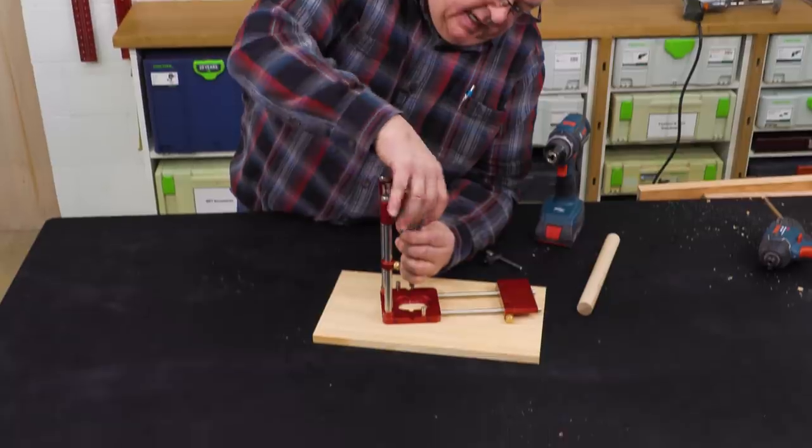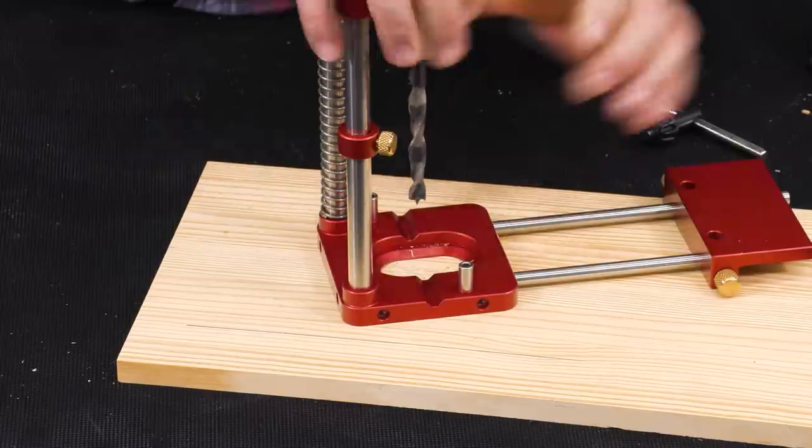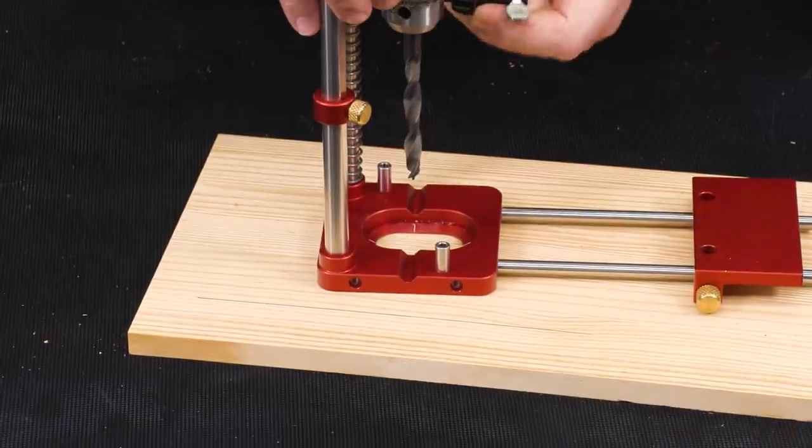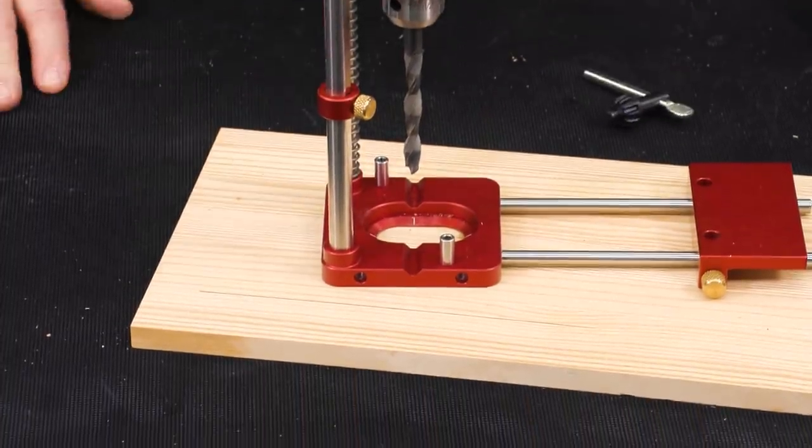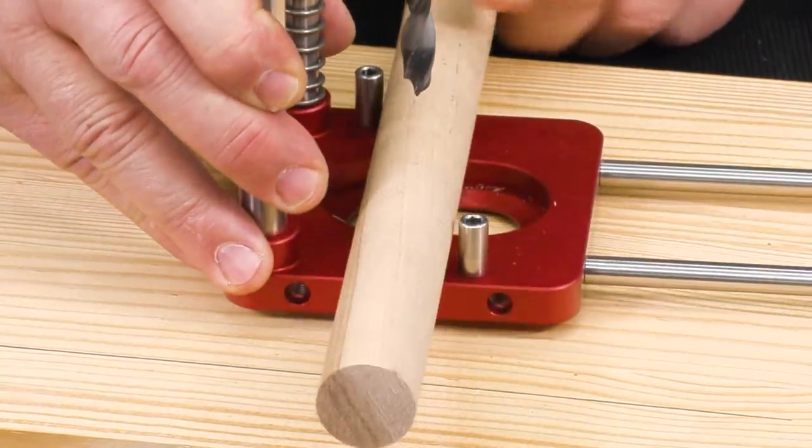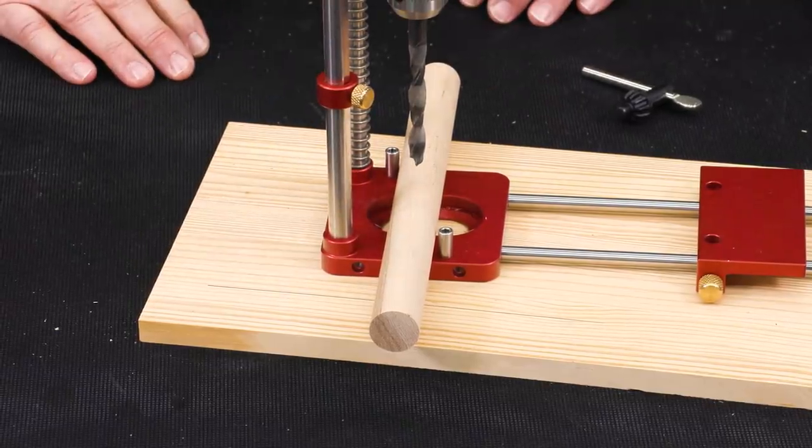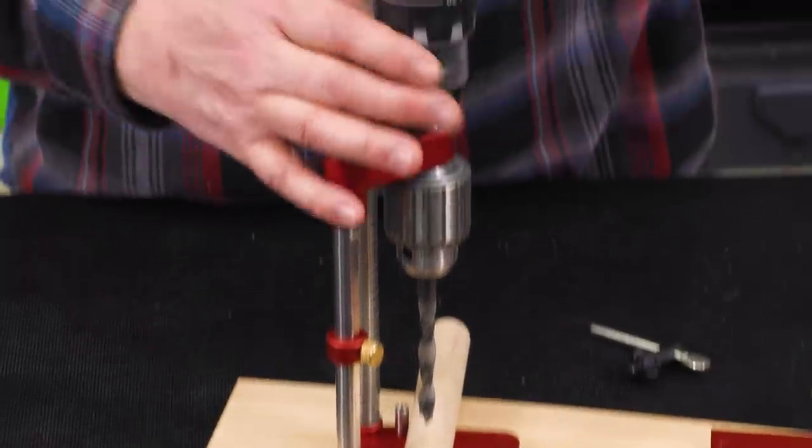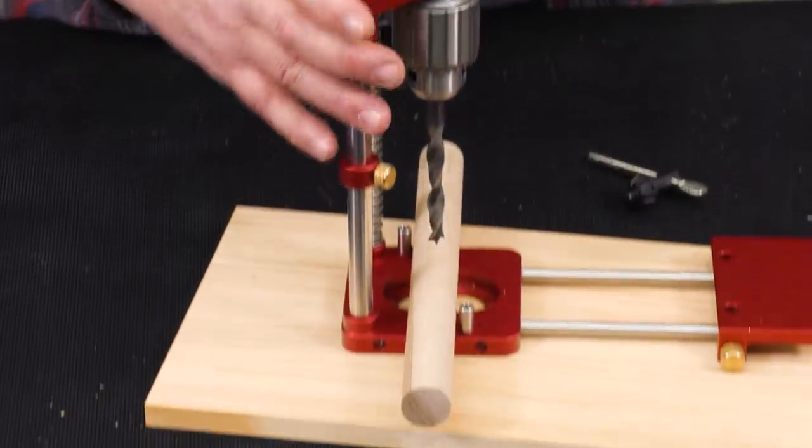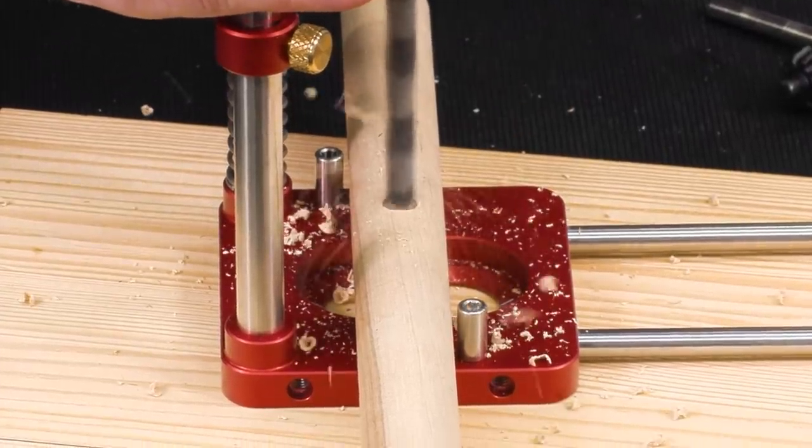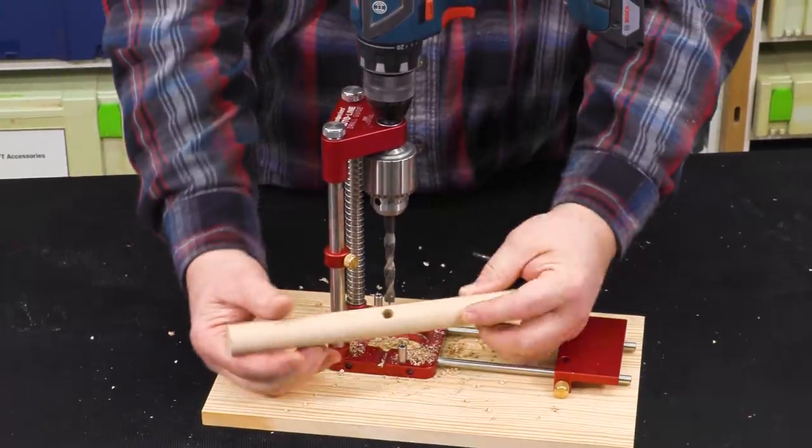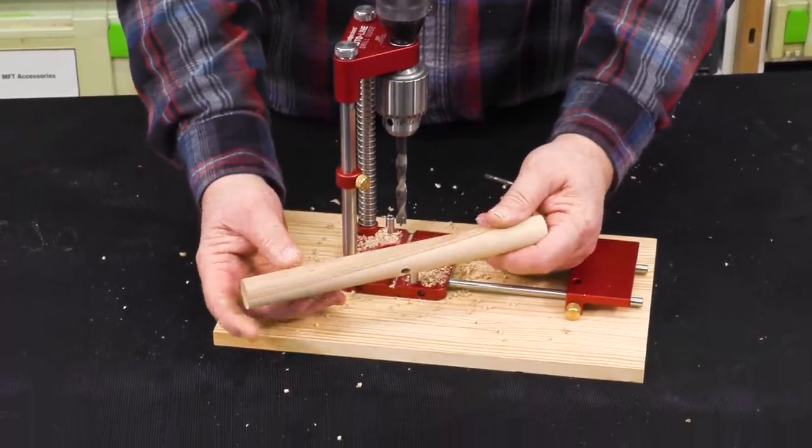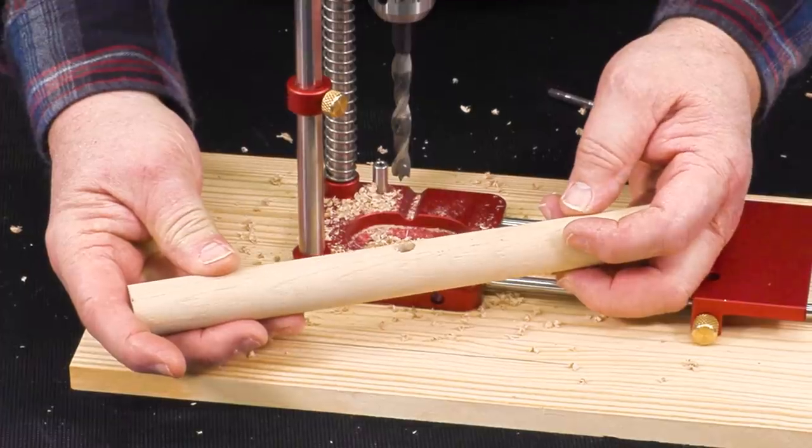So let's chuck up a drill bit and one of the first things I want to show you is the v-block in the base. The v-block makes it very simple to drill round stock. So you can see when I drop that v-block in there now my round stock is perfectly centered under the bit. And straight through that dowel in a piece of hickory.